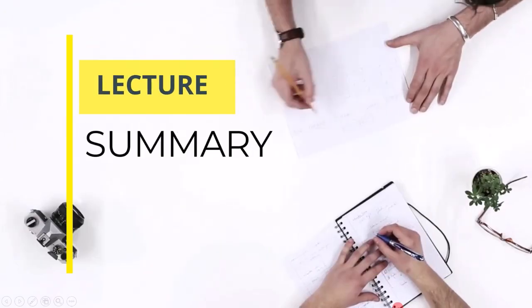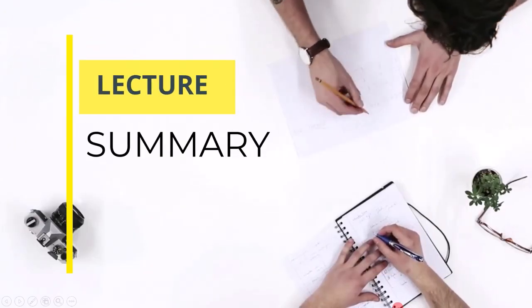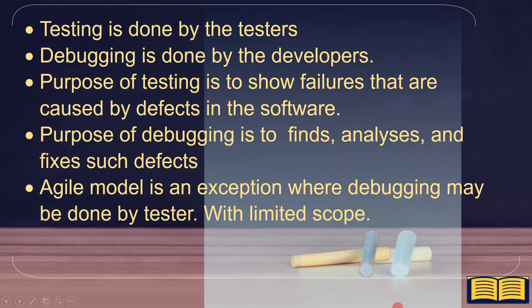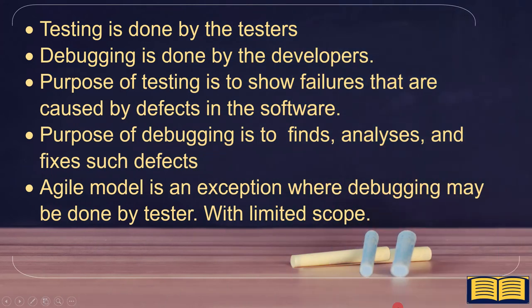Now let's summarize all the points. Testing is done by testers. Debugging is done by developers. The purpose of testing is to show failures that are caused by defects in the software. The purpose of debugging is to find, analyze, and fix such defects. The agile model is an exception where debugging may be done by a tester with limited scope.